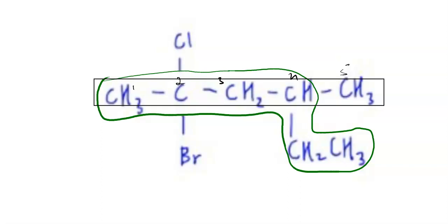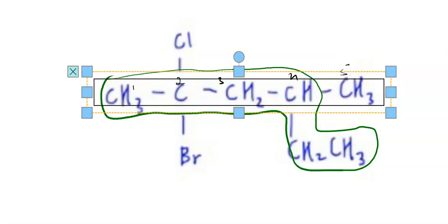But if you number it 1, 2, 3, 4, 5, 6, in this way you get 6 carbons. In this way you get 5 carbons. So your longest carbon chain - this one is rejected, this one is accepted.